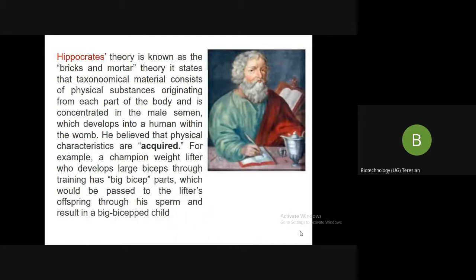Some of the pioneers in the field of genetics were Hippocrates. His theory is known as the Briggs and Mortar theory. It states that materials consist of physical substances originating from each part of the body, concentrated in the male semen, which develops into a human within the womb of a female. He believed that physical characters are acquired — for example, a weightlifter will have large biceps, and his offspring will also have large biceps, passed on through his sperm.